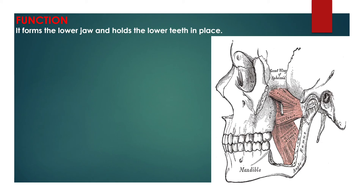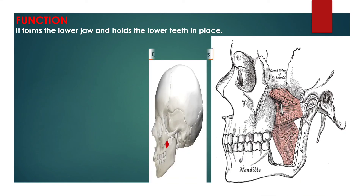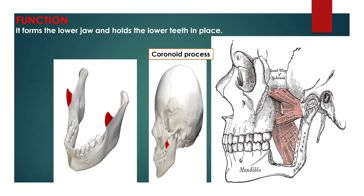The function of the mandible: it forms the lower jaw and holds the lower teeth in place. The mandible articulates with the left and right temporal bone at the temporomandibular joint. The condylar process provides superior and posterior projections from the ramus, which make the temporomandibular joint with the temporal bone. The coronoid process provides superior and anterior projections from the ramus, providing attachment to the temporalis muscle. Teeth are situated in the upper part of the body of the mandible; the front part holds narrower teeth, while the back part holds wider, flatter teeth primarily for chewing food.